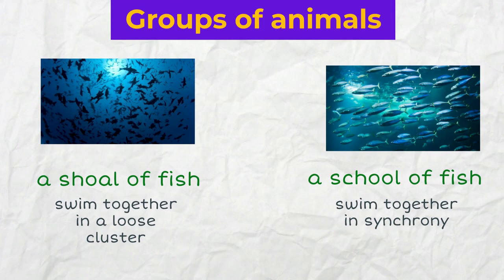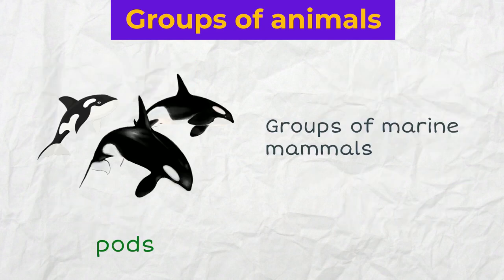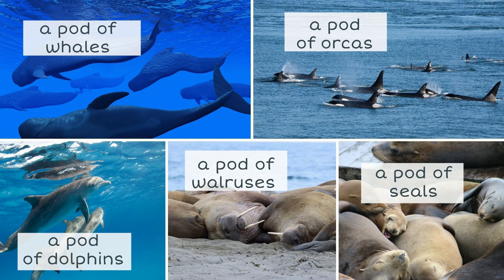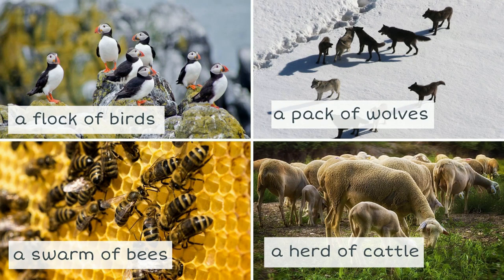There are special words to name groups of different animals. A school of fish or a shoal of fish — it is a shoal when fish swim together in a loose cluster and a school when they swim together in synchrony. Groups of marine mammals are called pods: for example, a pod of whales, orcas, dolphins, walruses and seals. It's a flock of birds, a pack of wolves, a swarm of bees or other insects, a herd of cattle. The word flock can also be used for a group of goats and sheep.